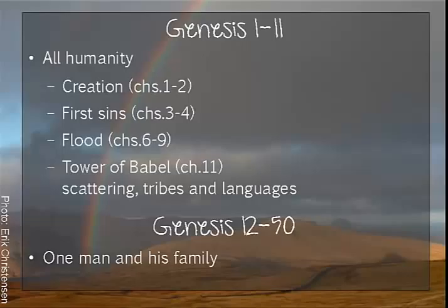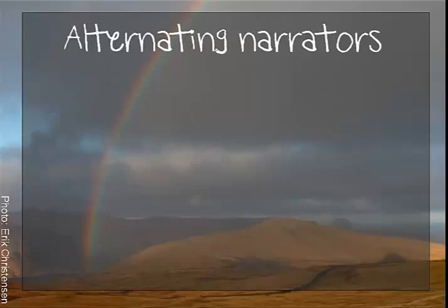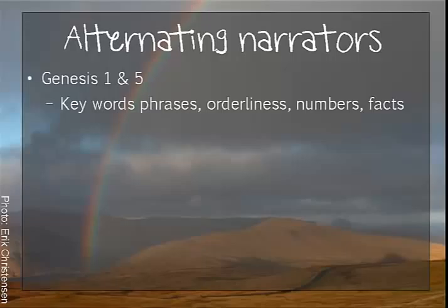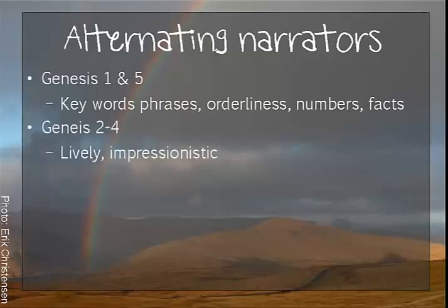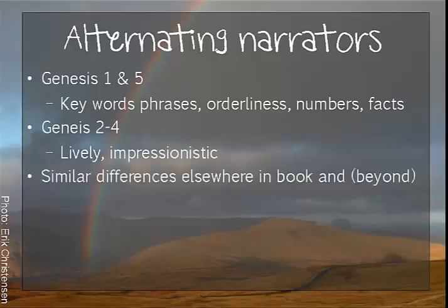In the early chapters, the telling of the story seems to alternate between two narrators. So Genesis 1 and 5 contain similar keywords and phrases and show a strong interest in orderliness and factual information like numbers. Genesis 2 to 4, by contrast, are more vivid and lively but more impressionistic. These sorts of differences can be spotted in other parts of the book and beyond.